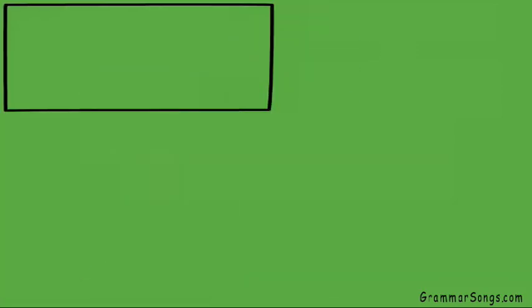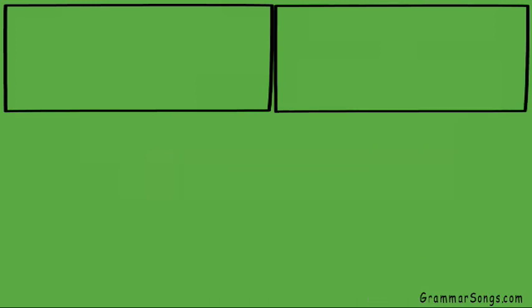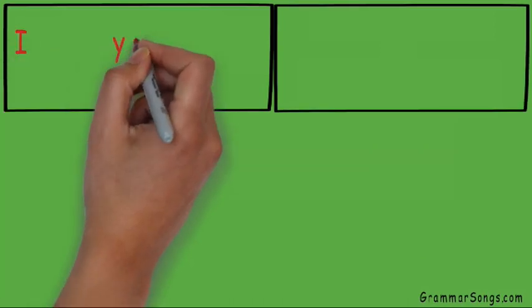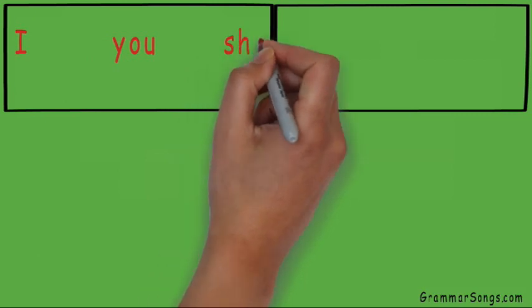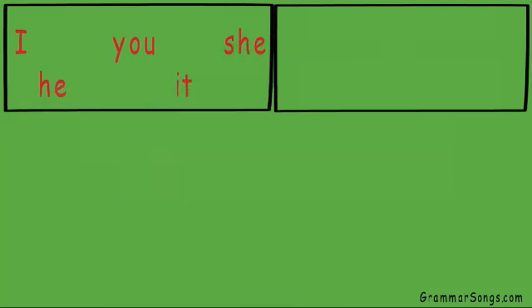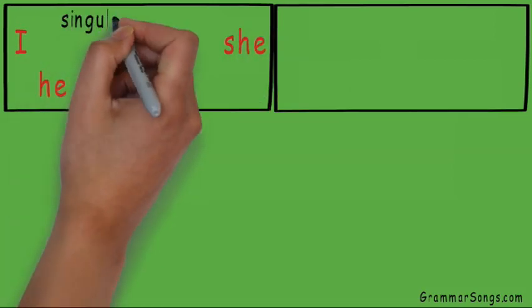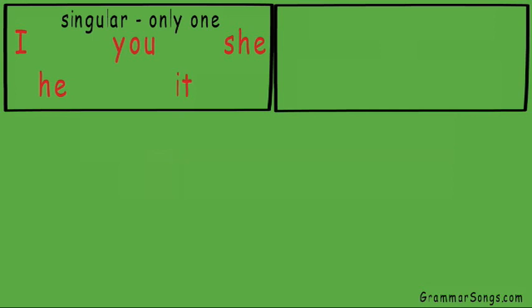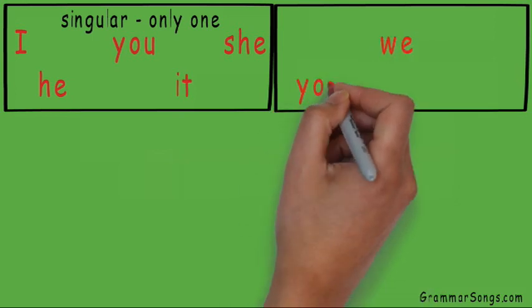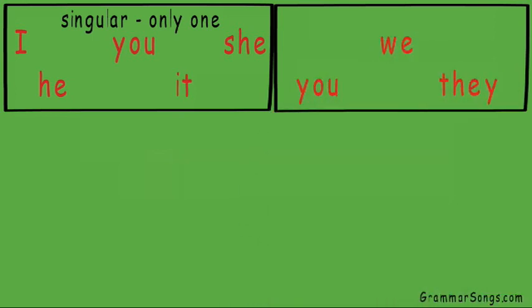Don't worry, I'll explain. You actually have had some experience selecting pronouns with the proper number and gender when you learned about personal and subject pronouns in earlier videos. You learned to choose I, you, she, he, or it when the subject was singular, or just one, and to use we, plural you, or they when the subject was plural, or more than one.